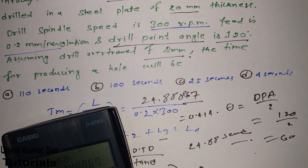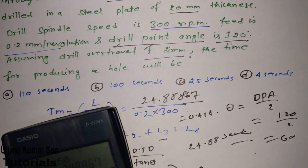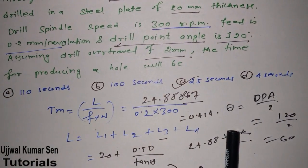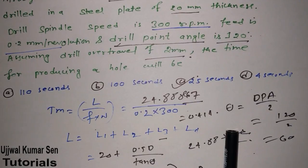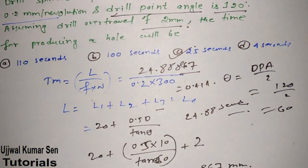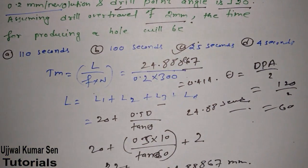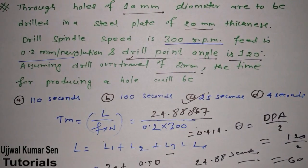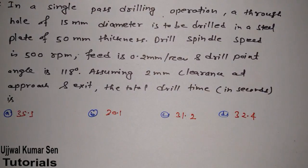Calculating: tm = 24.888 / (0.2 × 300) = 0.4148 minutes. Converting: 0.4148 × 60 = 24.88 seconds. The right answer is approximately 25 seconds. The answer matches option C, which is confirmed correct.